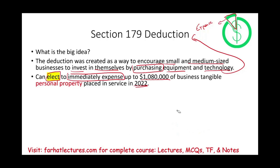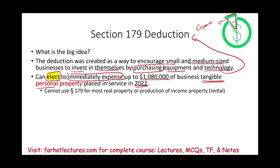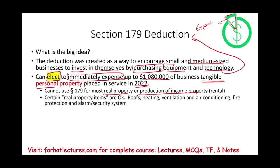There's an amount you can immediately expense, and it has to be tangible — meaning physical — and personal property, in contrast to real property like a building. You cannot use Section 179 for real property or production-of-income property such as rental property. However, certain rental property components are okay: roofs, heating, ventilation, air conditioning, fire protection, and alarm systems are considered separate from real property and are eligible for Section 179.